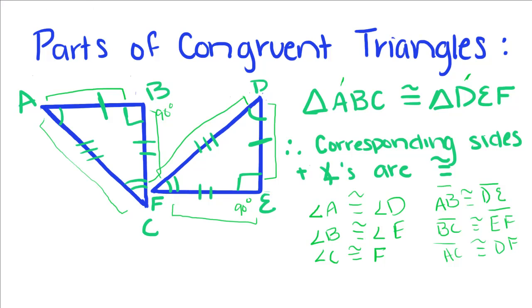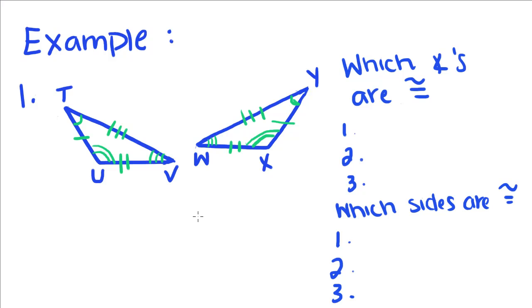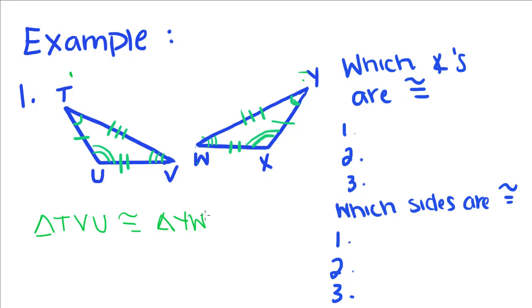Now that we know which angles have to be congruent to which, we're going to do an example naming which angles are congruent. If we were to name this triangle according to how it's congruent, if we start with T, we know that triangle TVU is congruent — we have to name them the same way. We went from one arc mark to three, so we have to go from one to three: triangle YWX.